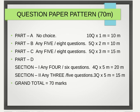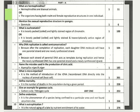The grand total of the entire paper is 70 marks, and practicals are worth 30 marks each. Now let us proceed to the question paper. The questions include answers. Part A: the first question asked in 2019 is — what are hermaphrodites?